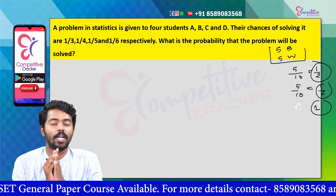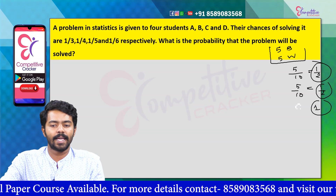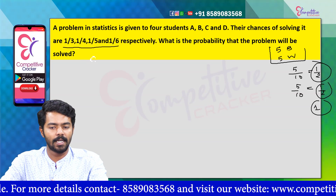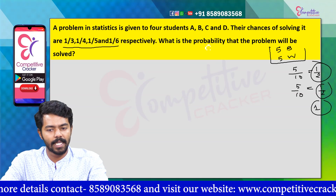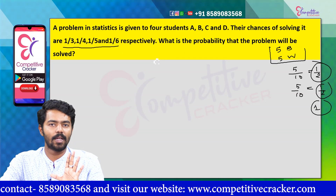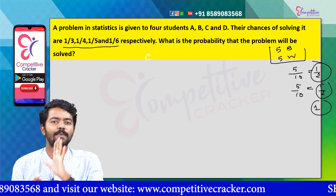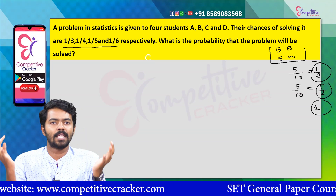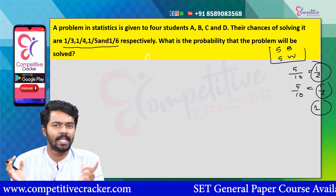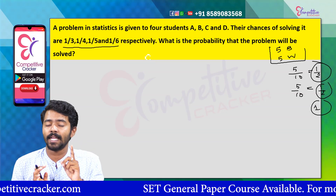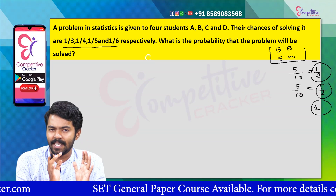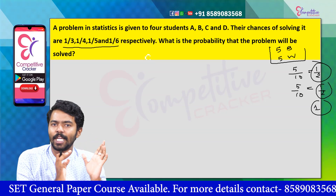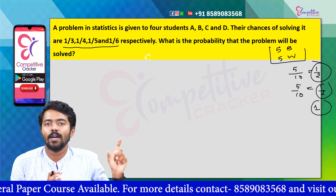If you have a total probability, you can see the total probability. Clear? Yes. So here, we are going to solve the problem. If we have a total probability, we have to solve the problem. Problem solving plus problem solving. Now, if we have total probability equals 1, the probability of problem solving is equal to 1 minus probability of not solving.